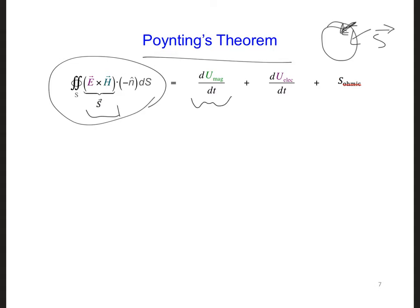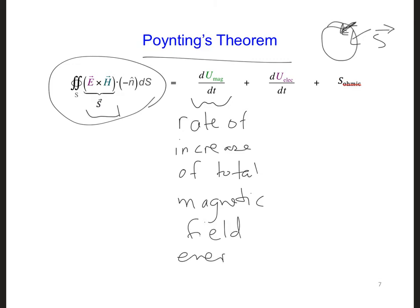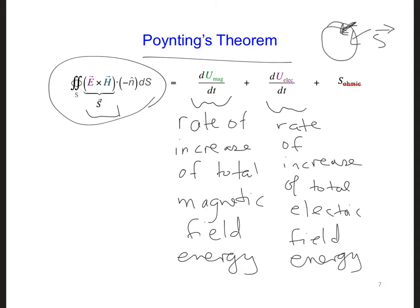That is equal to, this first term is the rate of increase of the total magnetic field energy. So rate of increase of the total magnetic field energy. And so then the second term is the rate of increase of the total electric field energy. And this is inside the volume. So inside the volume of the sphere, the first term here is the rate of increase of the total magnetic field energy, and this is the rate of increase of the total electric field energy.